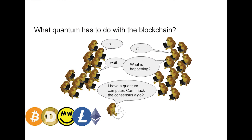And what quantum computers have to do with that, so since what happens is decided by a computer, what if someone has a computer that could be superior in certain ways? Could that person hack the whole system, hack the consensus algorithm? So that's the subject of this talk.